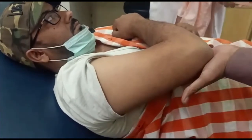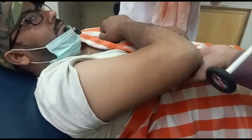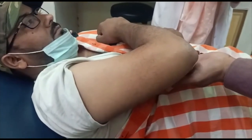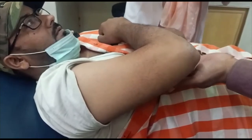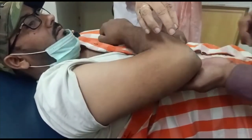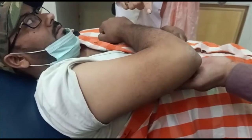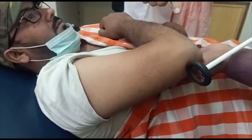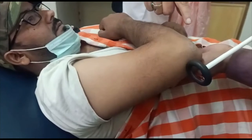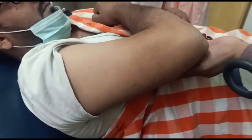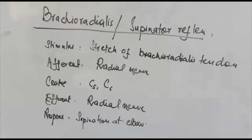For the tricep reflex, we support the subject's elbow and flex the subject's arm at right angle. You can see that the subject's arm is flexed at right angle and we strike the tricep tendon just proximal to the point of the elbow. The result is contraction of the tricep muscle.